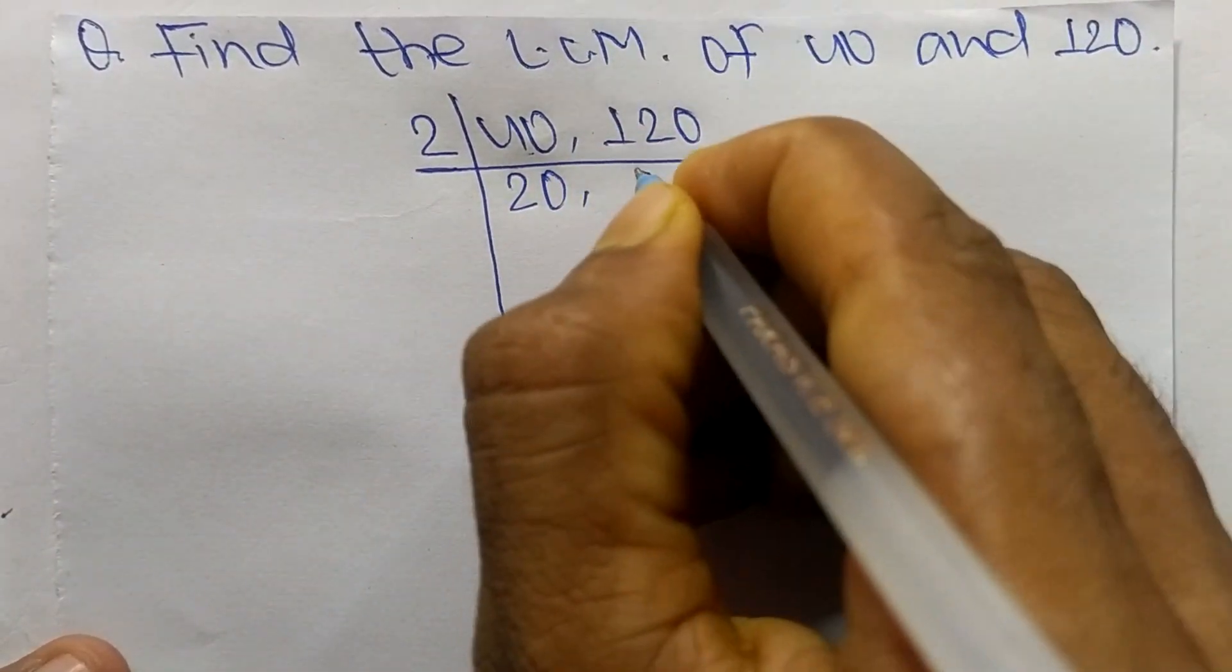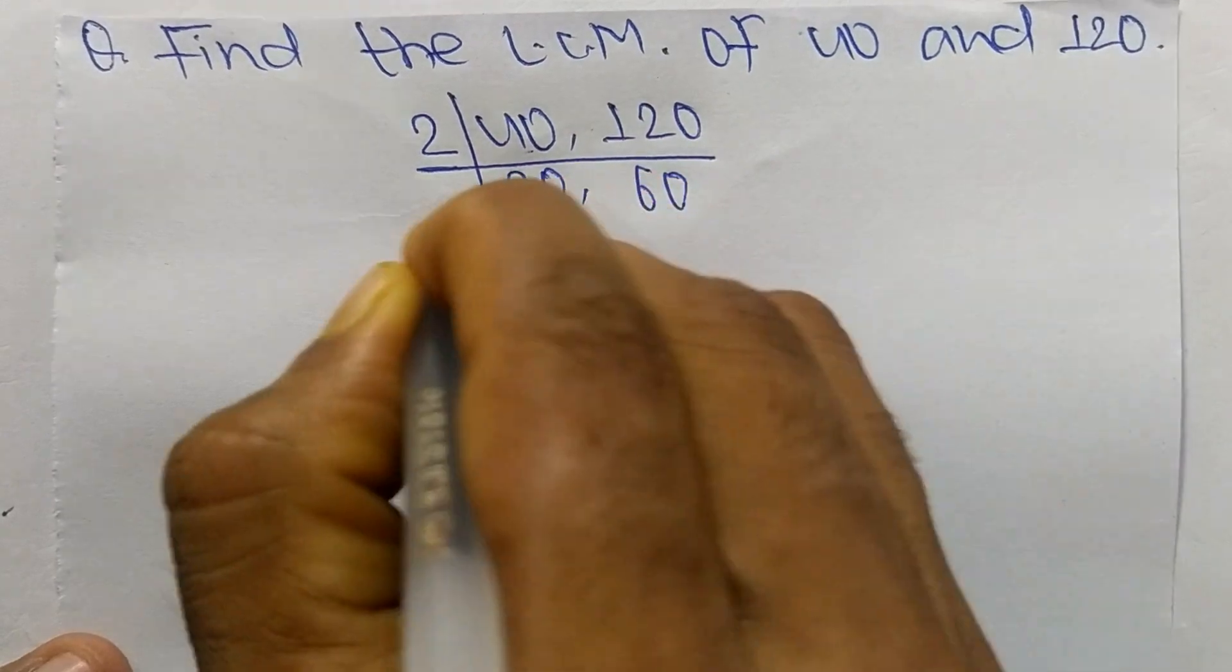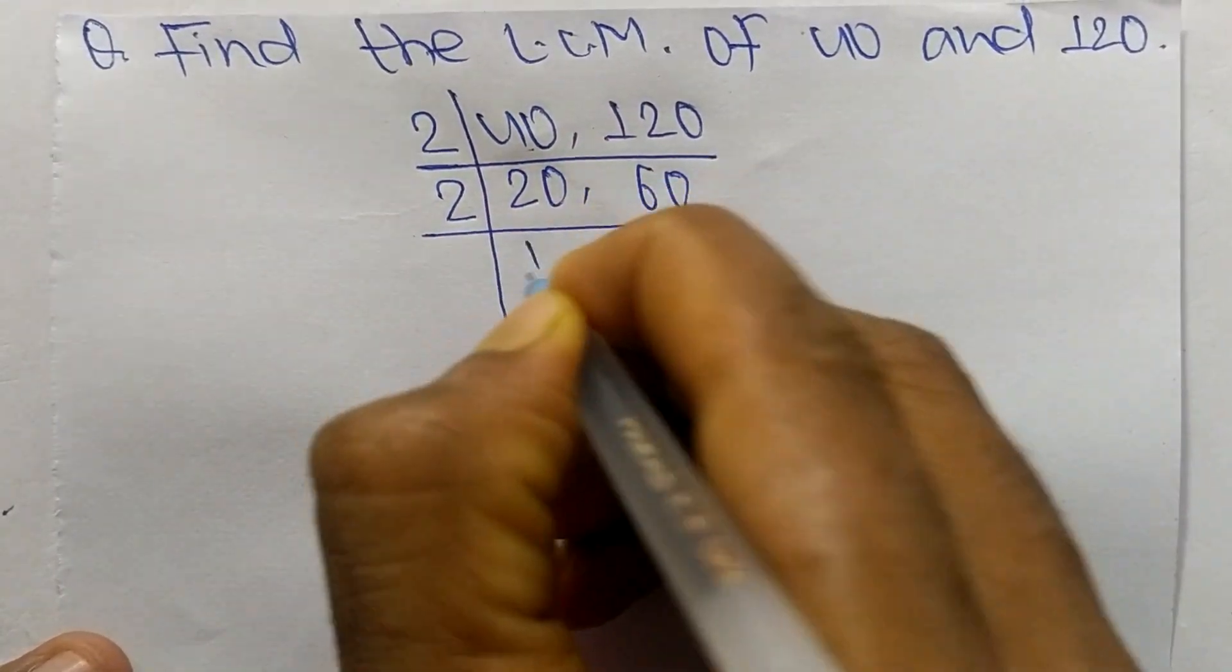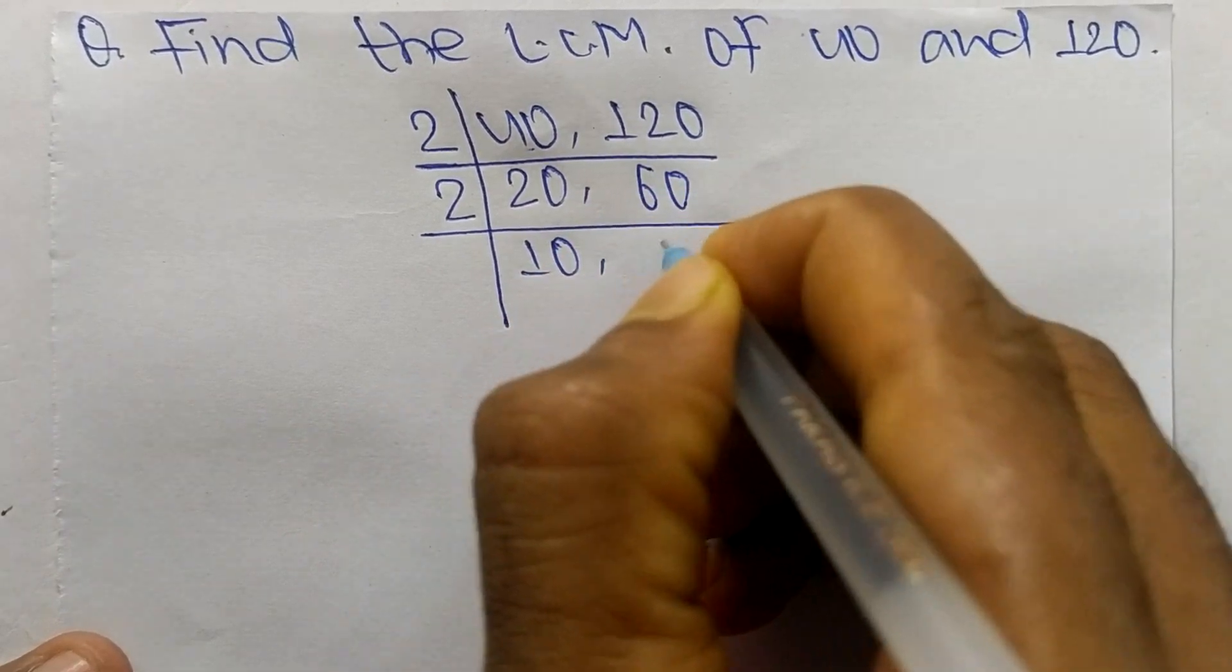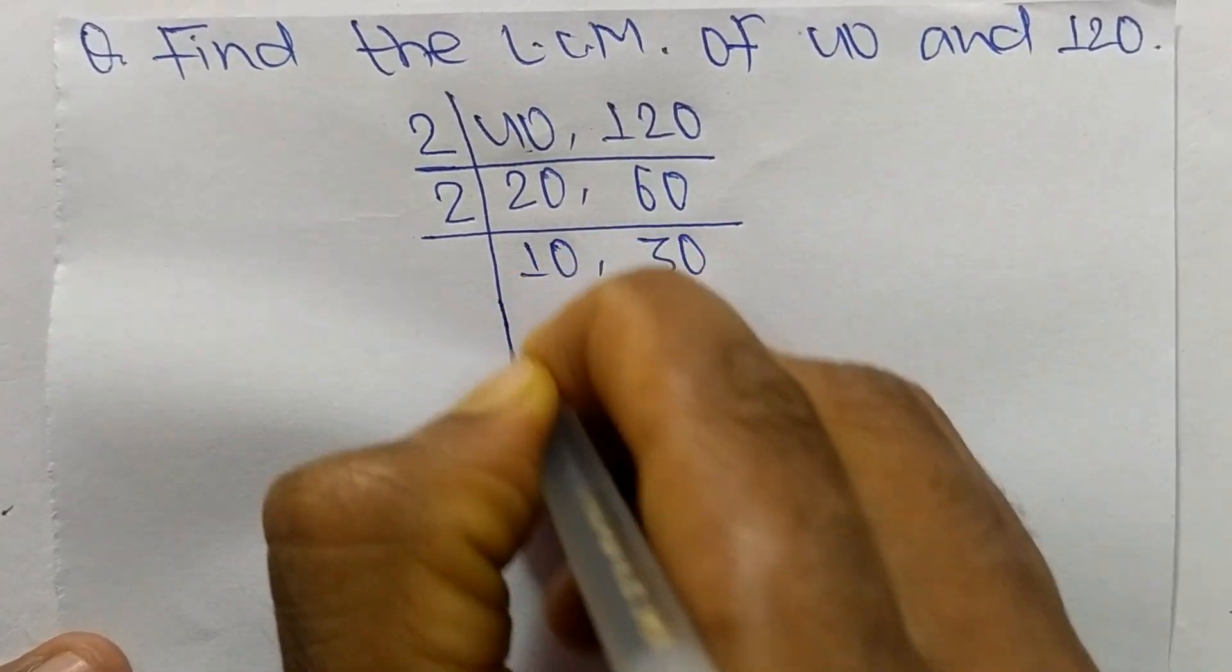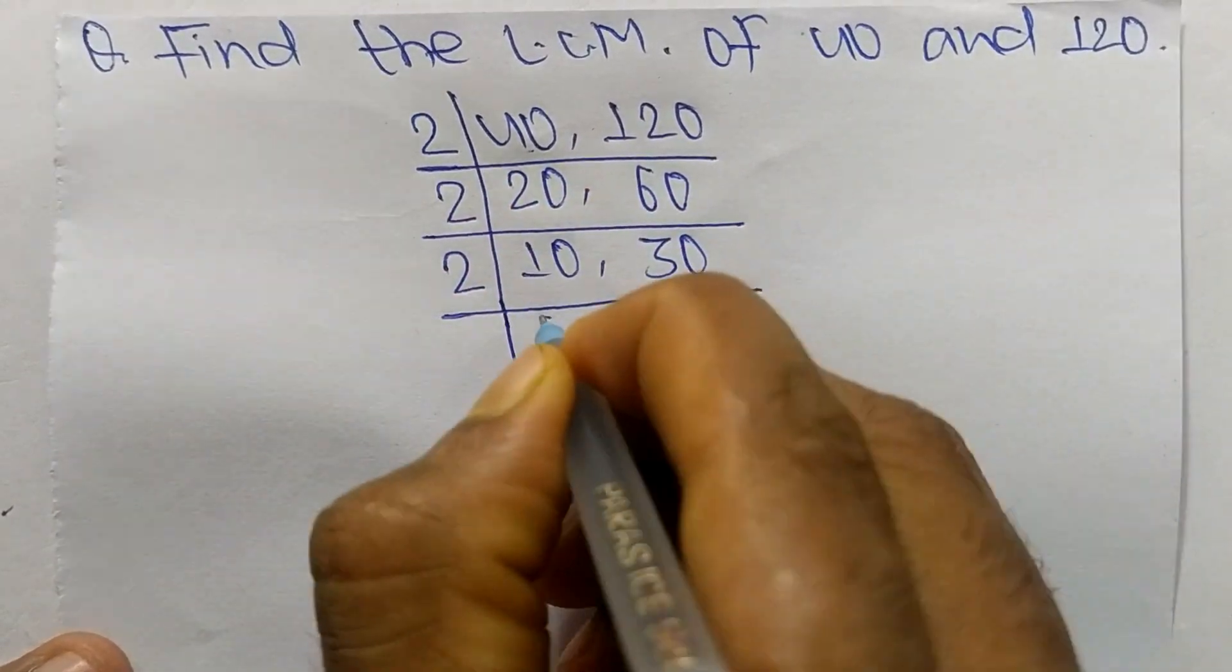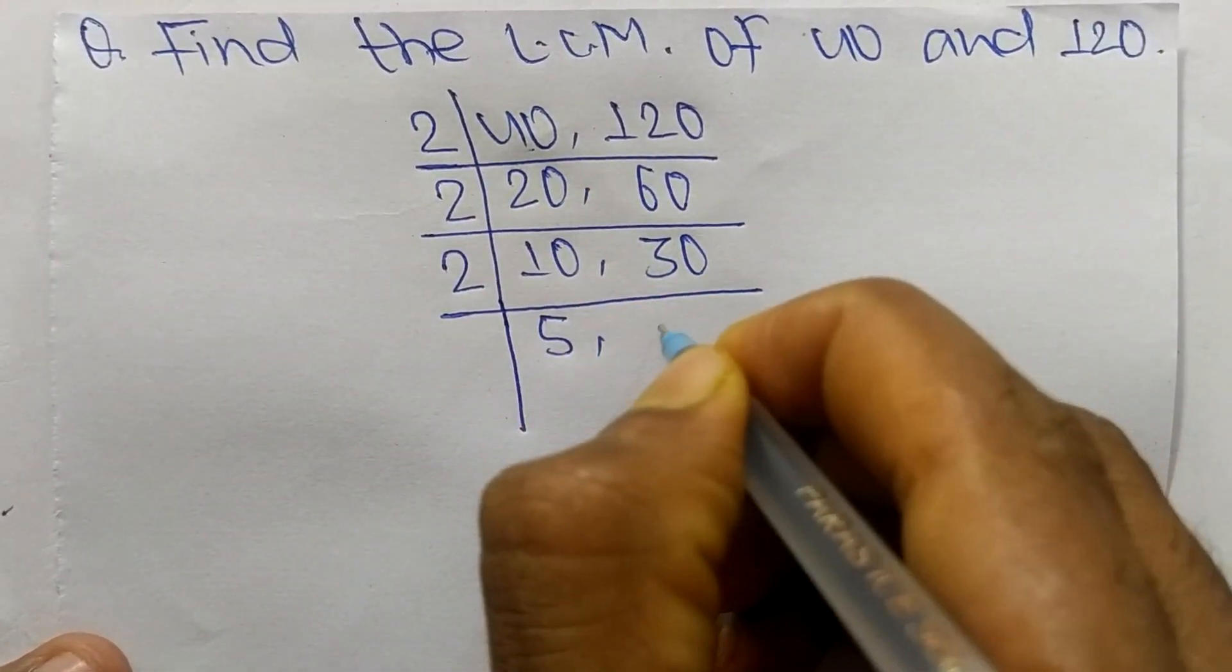Again it is divisible by 2. So 2 times 10 mean 20, 2 times 30 mean 60. Again it is divisible by 2. So 2 times 5 mean 10, 2 times 15 mean 30.